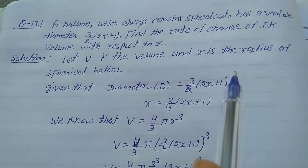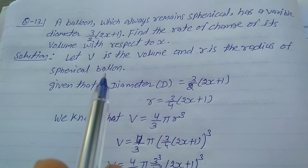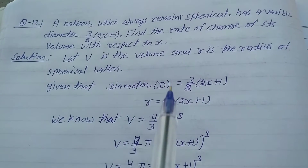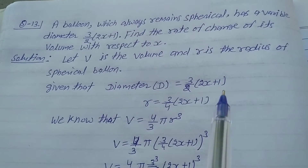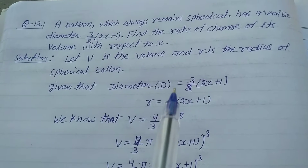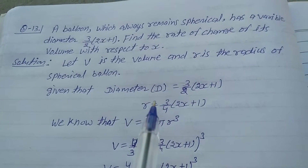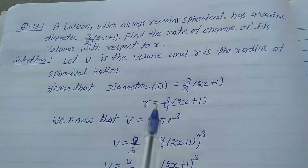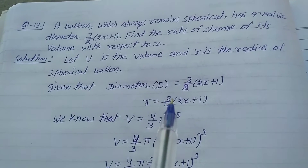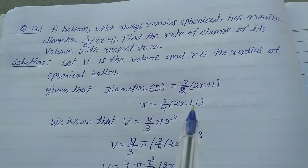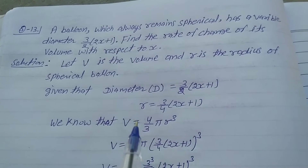Given that diameter d = 3/2 × (2x + 1). Since the radius is half of the diameter, r = 3/4 × (2x + 1).